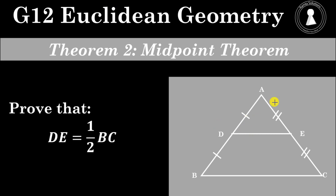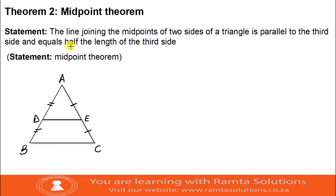As you can see, we are given triangle ABC, and also that line DE is parallel to BC. We will prove that DE is half BC. The midpoint theorem says the line joining the midpoints of two sides of a triangle is parallel to the third side and equals half the length of the third side.